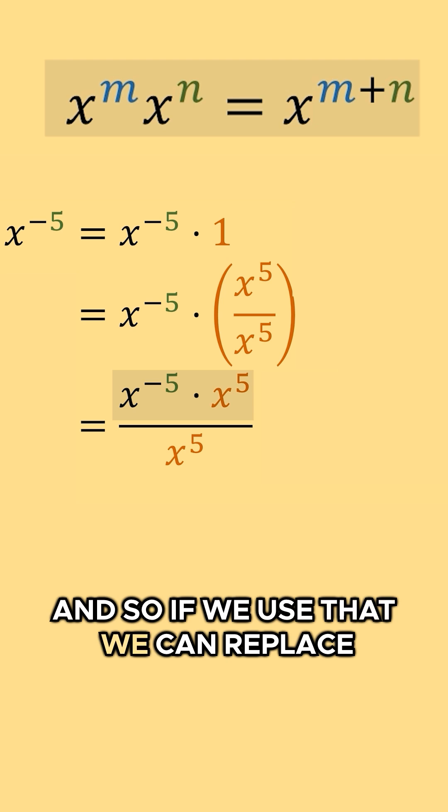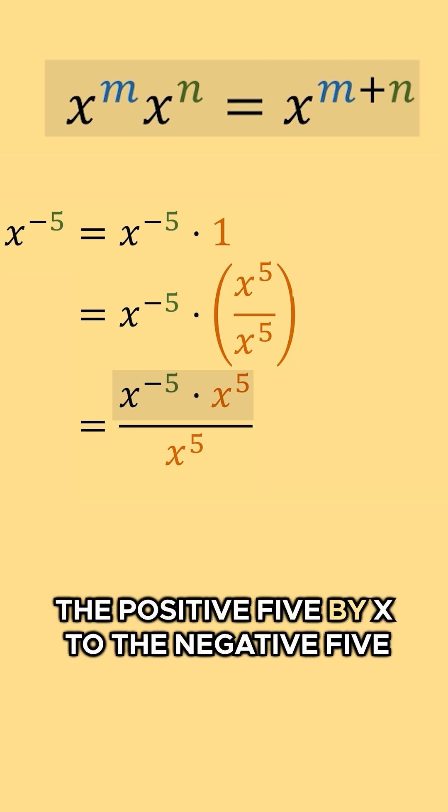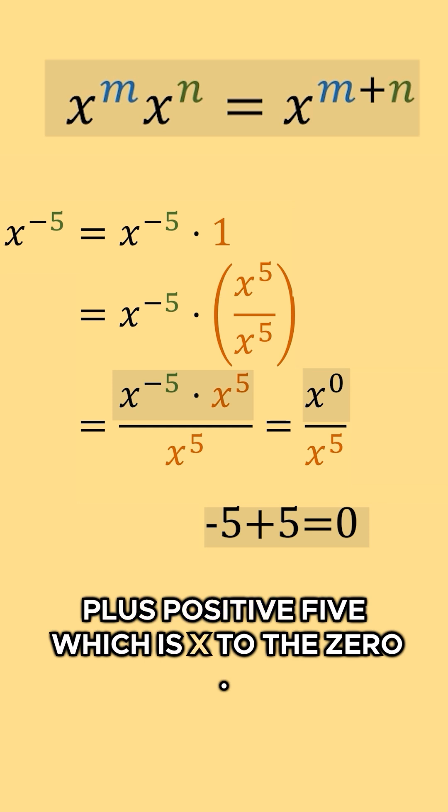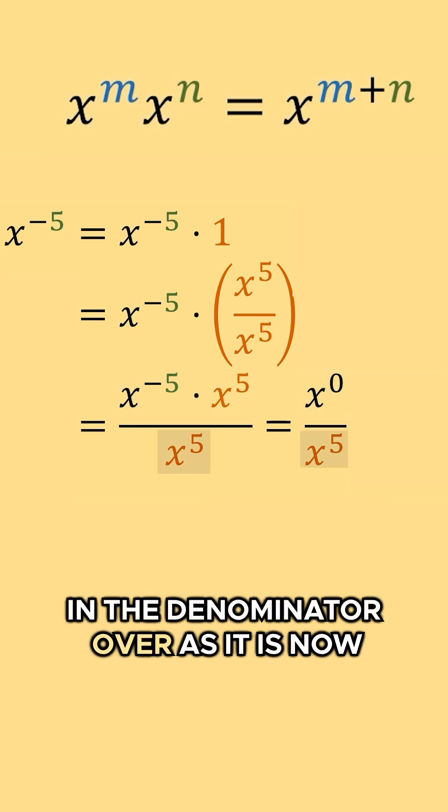And so if we use that, we can replace x to the negative five times x to the positive five by x to the negative five plus positive five, which is x to the zero, and then we'll bring x to the five in the denominator over as it is.